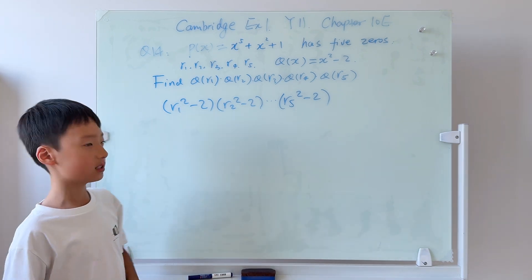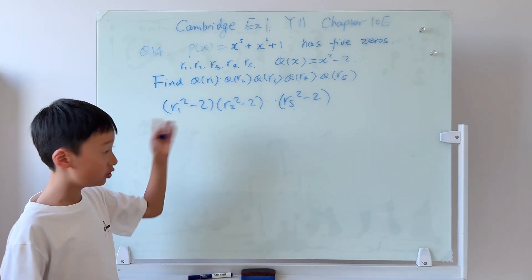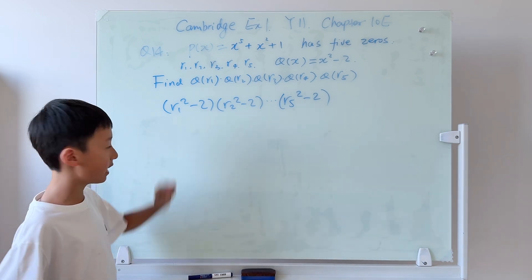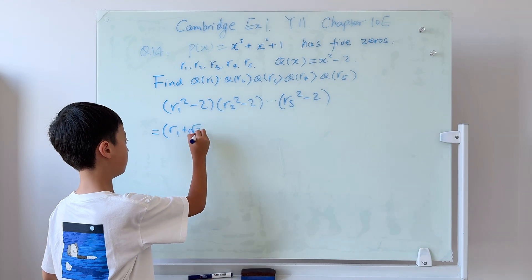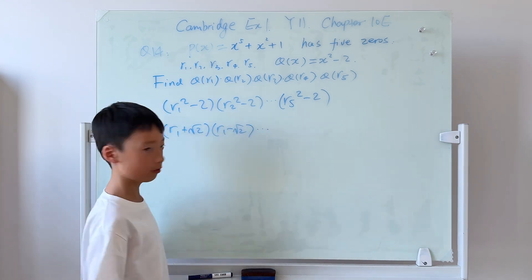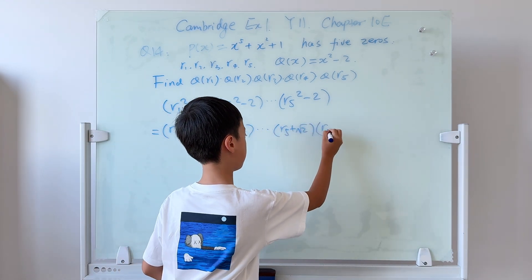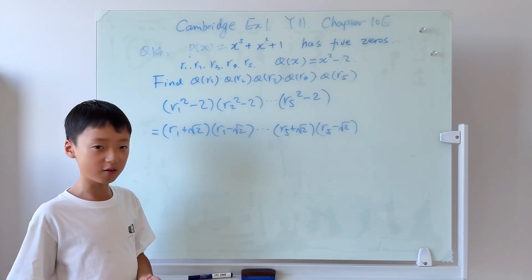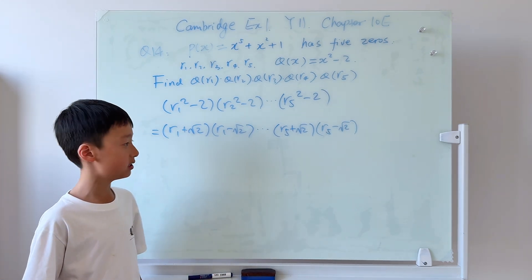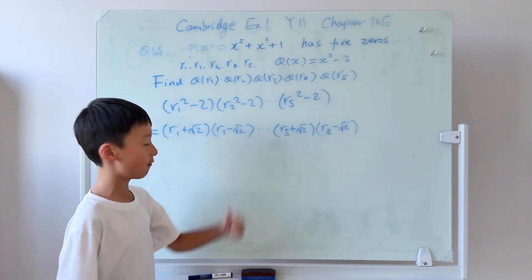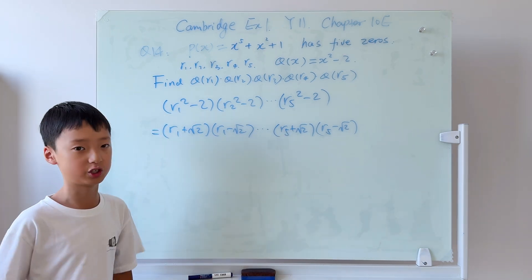How do we make this better? We reduce the power since it's a difference of squares. We can change it into r1 plus square root 2 times r1 minus square root 2, and then all the way to r5 plus square root 2 times r5 minus square root 2. I'll rearrange these ten brackets with the first five being the plus version and the last five being the negative version.